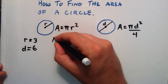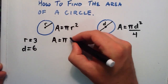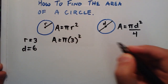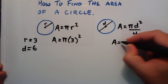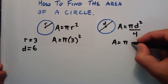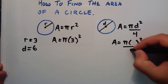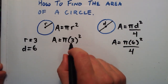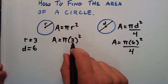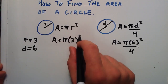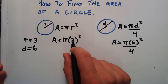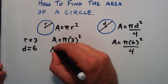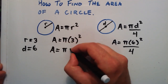For this expression, the area is equal to pi multiplied by its radius squared, and the radius we said was equal to 3. So we have the area is equal to pi times 3 squared. We always do the exponents before multiplication, so 3 squared is 3 times 3, which is 9. So the area of our circle is equal to pi times 9.